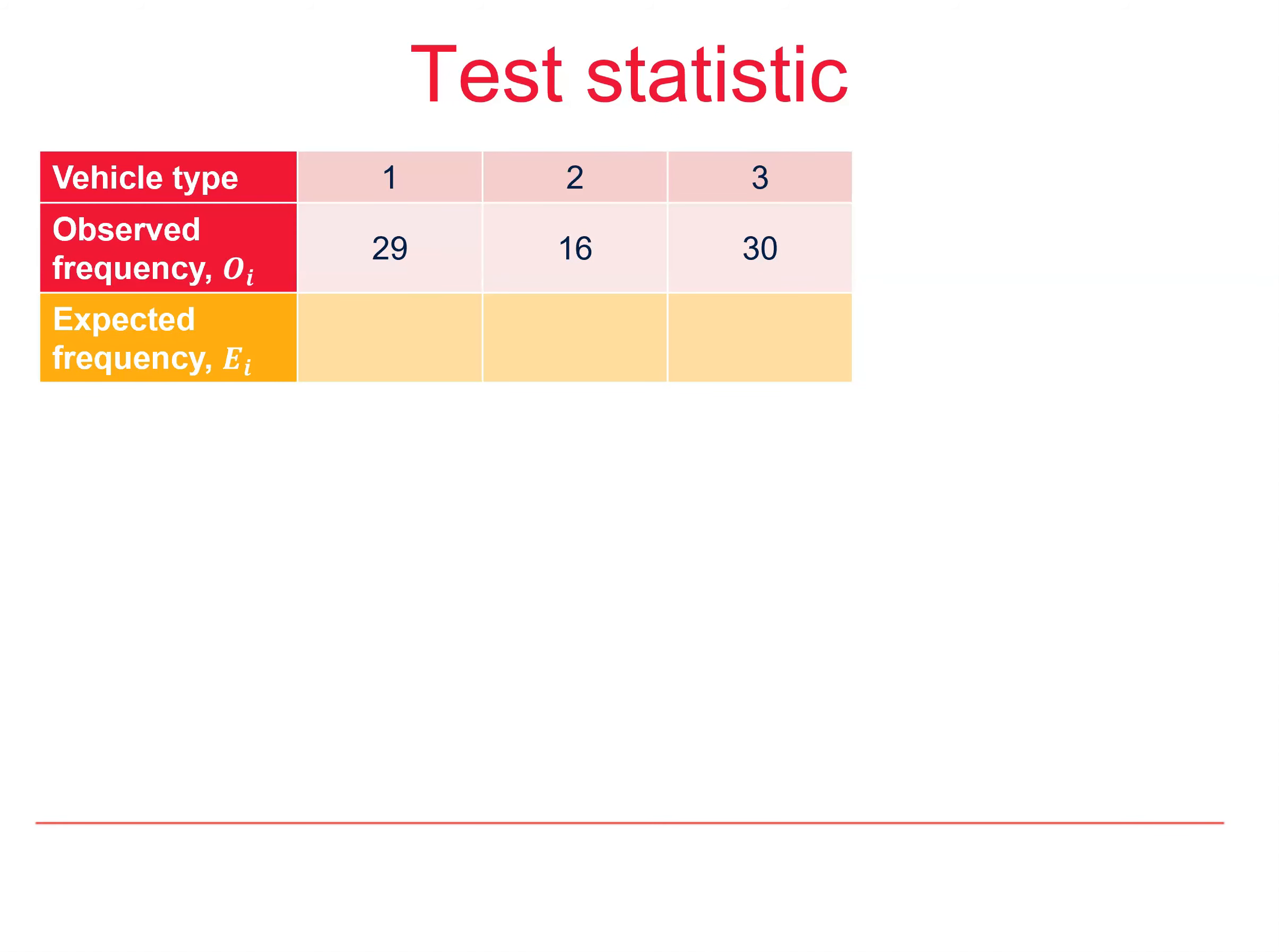We follow the same method as before, working out the expected values if the null hypothesis is true. In this case, as we're testing against a uniform distribution, we'd expect all the frequencies to be the same. With a total of 75, that means 25 in each category.